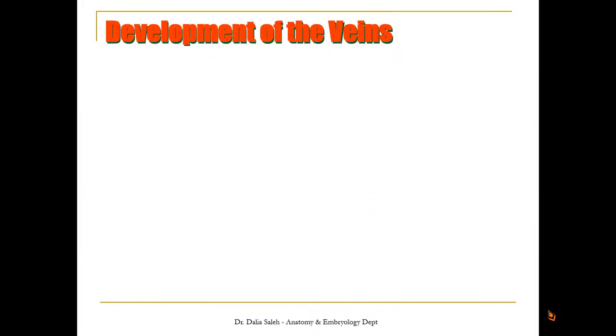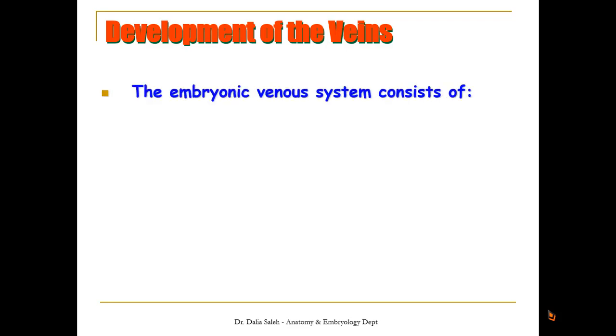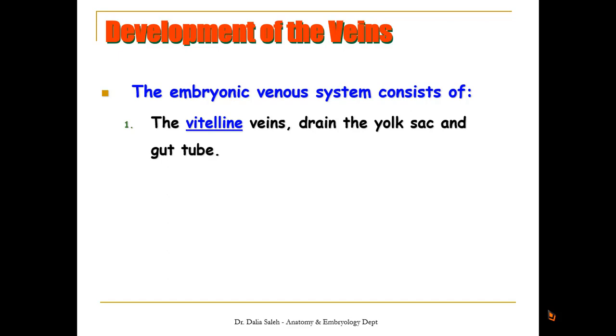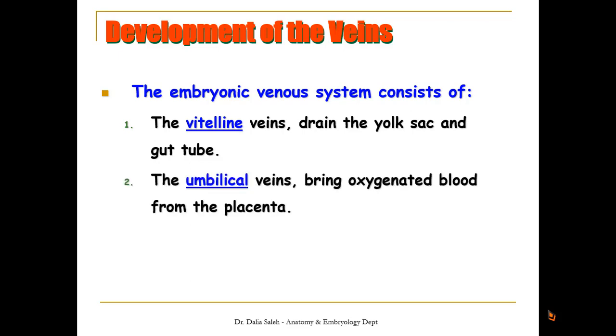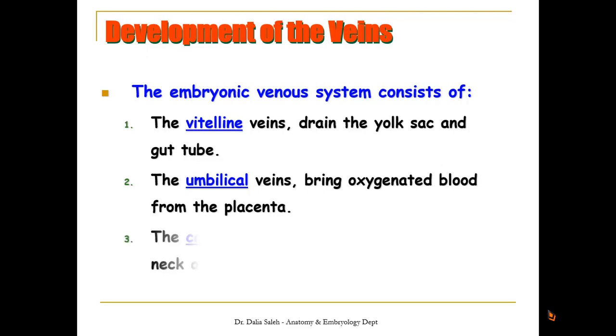In order to understand the placental circulation and fetal circulation, you first need to know about the development of the fetal vessels. The embryo has the following veins: the vitelline veins, which develop around the wall of the yolk sac and the gut tube; the umbilical veins, which develop inside the umbilical cord and communicate with the placenta, bringing oxygenated blood from the placenta to the fetus; and the cardinal veins, which drain the body wall, head, and neck.